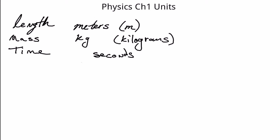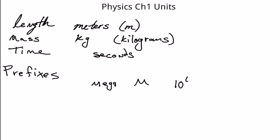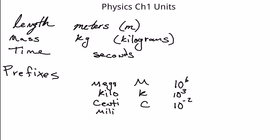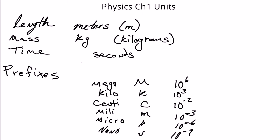The prefixes you must know — I'm just going to write the abbreviations. For mega, we use a big M, which is 10 to the sixth power. Kilo is a big K, that's 10 to the third. Centi is just a lowercase C, which is 10 to the negative second. Milli is a lowercase M, that's 10 to the negative third. Micro uses mu and that's 10 to the negative sixth. And nano is 10 to the negative ninth. You must be familiar with these.